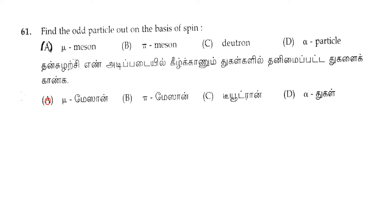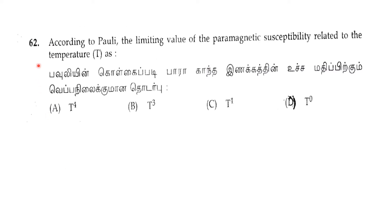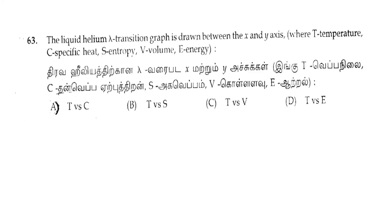The correct answer for question 61 is noted. Next, question 62: according to Pauli, the limiting value of the paramagnetic susceptibility related to temperature T has — this is Pauli paramagnetism. Option D, T0 is the correct answer for question 62.